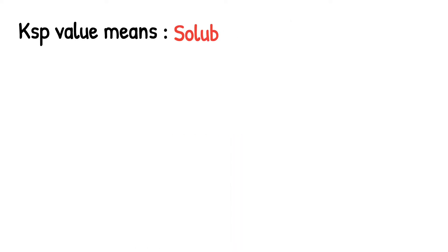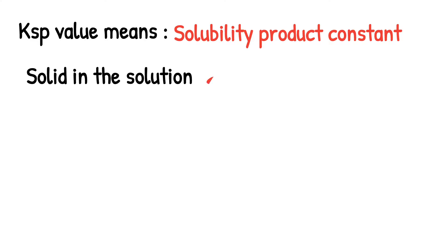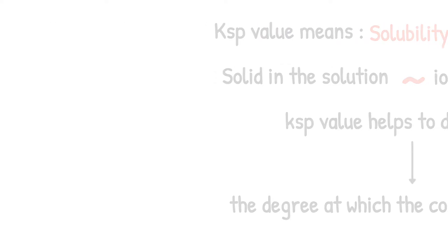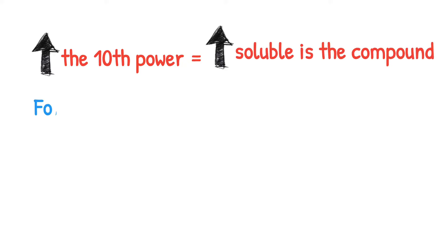There is a term called KSP value. It is the solubility product constant - the equilibrium between a solid and its respective ion in the solution. The value of this KSP helps to identify the degree to which the compound can dissociate in water. The larger the 10th power, the more soluble is the compound. For example, 2.5 × 10^-3 is greater than 2.5 × 10^-6.